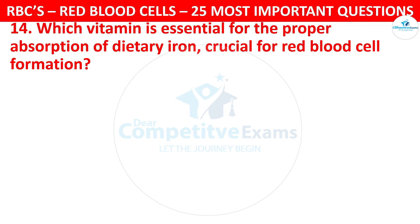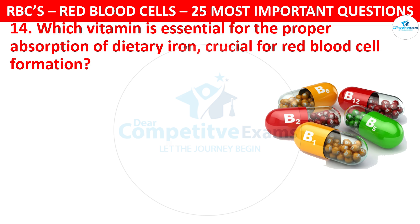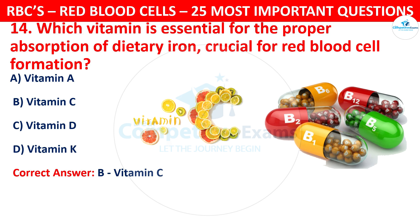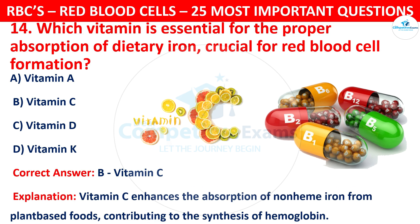Question 14. Which vitamin is essential for the proper absorption of dietary iron, crucial for red blood cell formation? Your options are: Vitamin A, Vitamin C, Vitamin D, or Vitamin K. The correct answer is B, that is Vitamin C. Vitamin C enhances the absorption of non-heme iron from plant-based foods, contributing to the synthesis of hemoglobin.